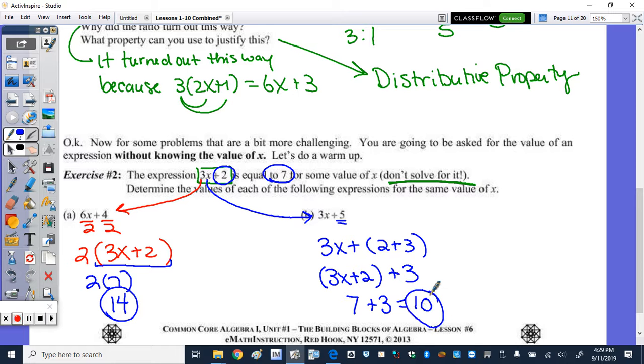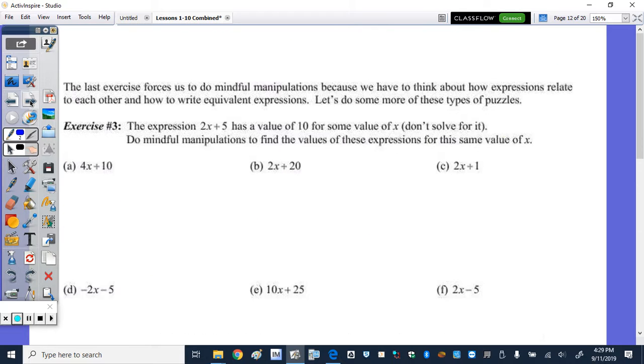So these are just some mindful manipulations. On the back side, I'm just going to pick a few, because these are like puzzles. And I'm going to pick the ones that are multiples. So 2x plus 5, when I double 2, we get 4. When we double 5, we get 10.